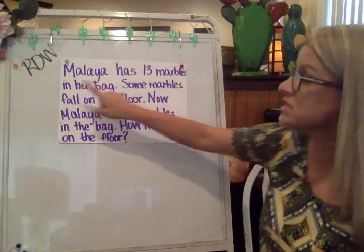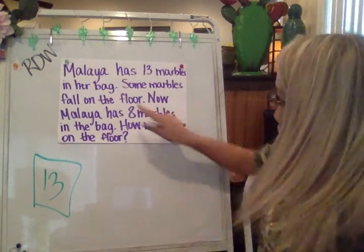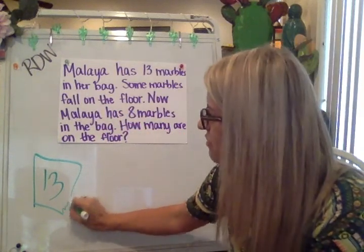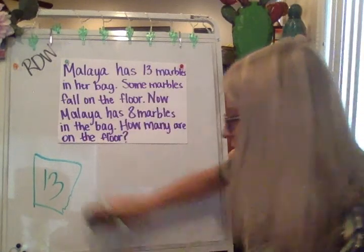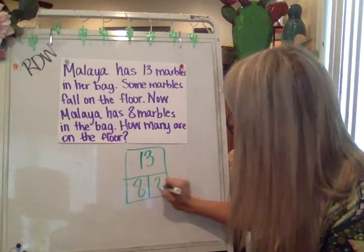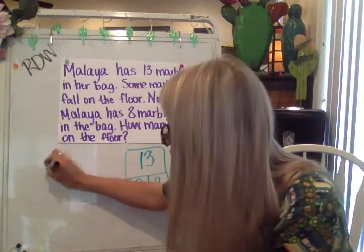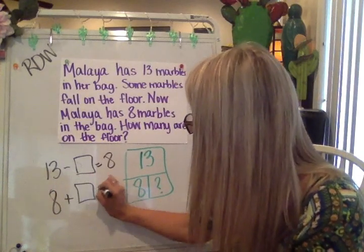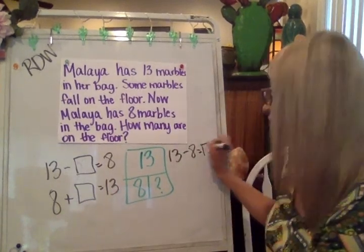Malaya has 13 marbles in her bag. Some marbles fall on the floor — maybe there's a hole in the bag. Now Malaya has eight marbles in the bag. How many are on the floor? This makes me think of a bar diagram. If she has 13, we know one of the parts is eight. The other part we are not sure about. So eight plus some number equals 13, or 13 minus a number equals eight. You could also say 13 minus eight, and that will tell you the difference — how many have fallen to the floor.